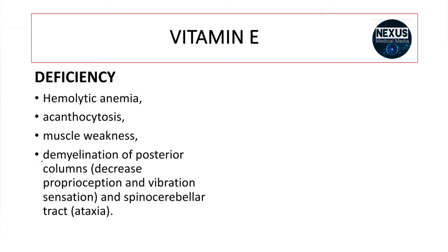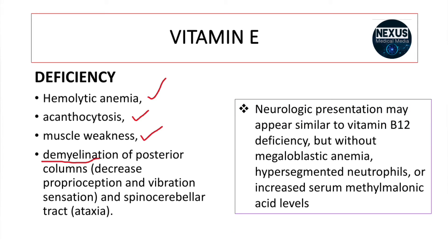What happens if there is a deficiency in vitamin E? The person may have hemolytic anemia, acanthocytosis, muscle weakness, and demyelination of the posterior columns. This leads to decreased proprioception and vibration sensation, and spinocerebellar tract disorders such as ataxia.